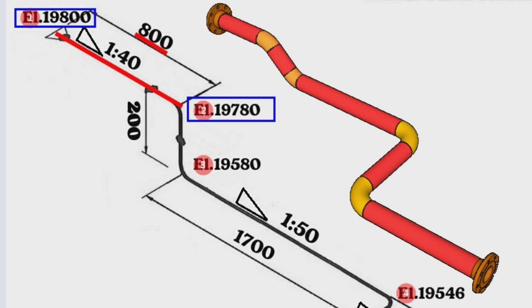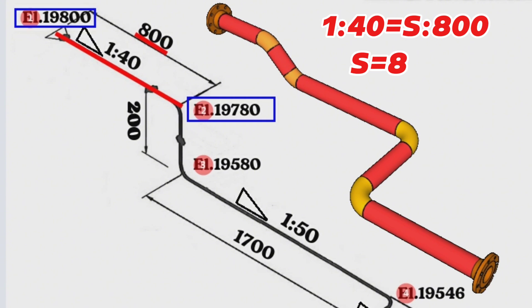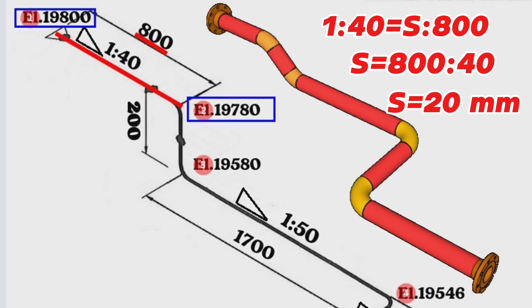Additionally, the slope symbol ratio in this part of the pipeline is 1:40, meaning that for every 1 unit of vertical elevation there are 40 units of horizontal distance. We can calculate the slope of this part: 1:40 equals S over 800, or S equals 800 divided by 40. Calculated and found S equals 20 millimeters. This means the height of the pipeline drops by 20 millimeters over a distance of 800 millimeters.